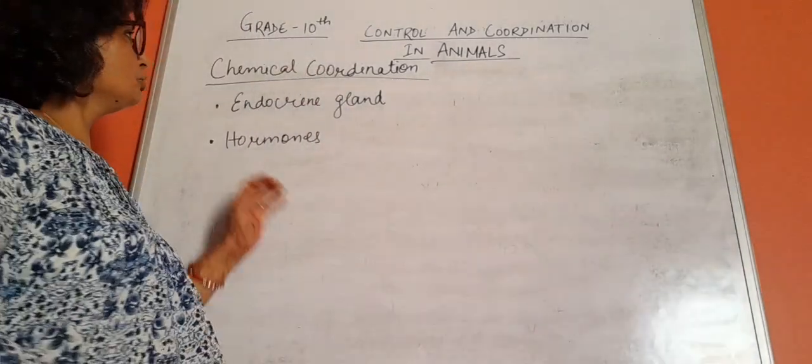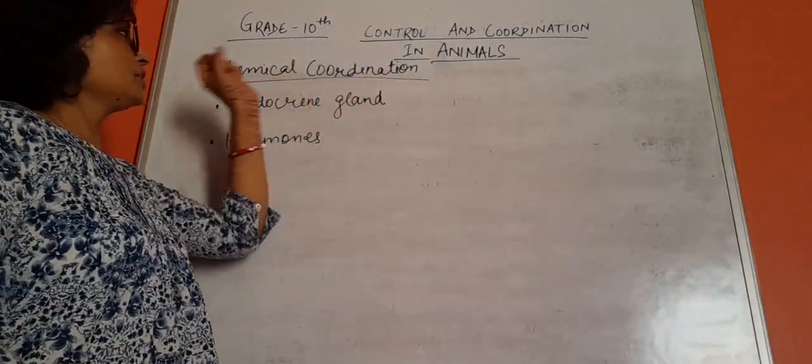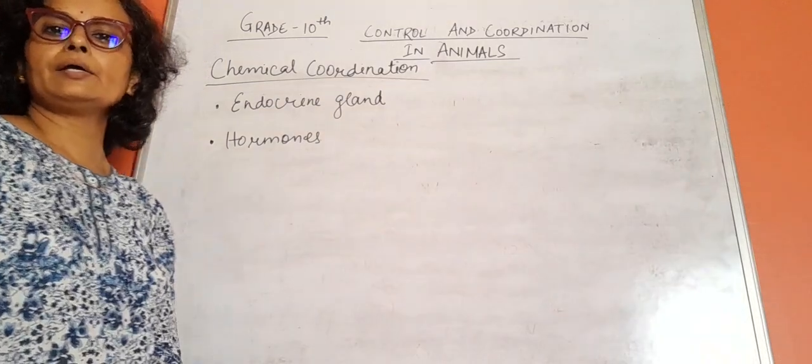In animals, in human, chemical coordination takes place by endocrine glands.